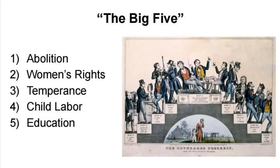These can be summarized by the Big Five. These movements are: abolition, probably the one you're most familiar with; women's rights, another you're very familiar with; temperance, sometimes referred to as prohibition, dealing with the evils people viewed alcohol as having on society; the anti-child labor movement; and lastly, the push for public education. Those are the Big Five, the five main movements.